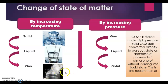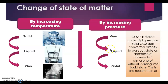This process is interconvertible: decreasing temperature converts vapor back to water, and further cooling converts water back to ice. Similarly, by increasing pressure, we can change the state of matter — gas can be converted into liquid and liquid into solid by increasing pressure.